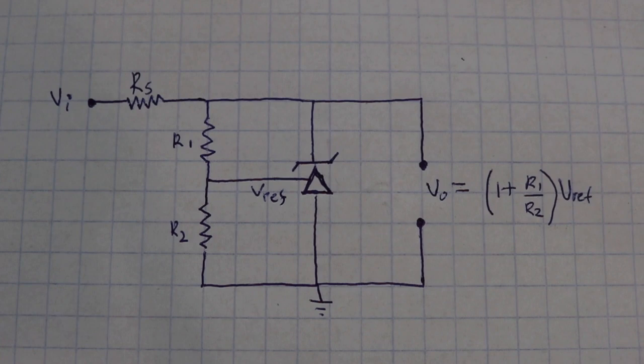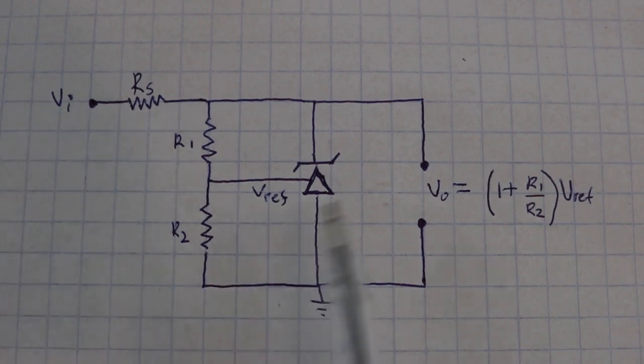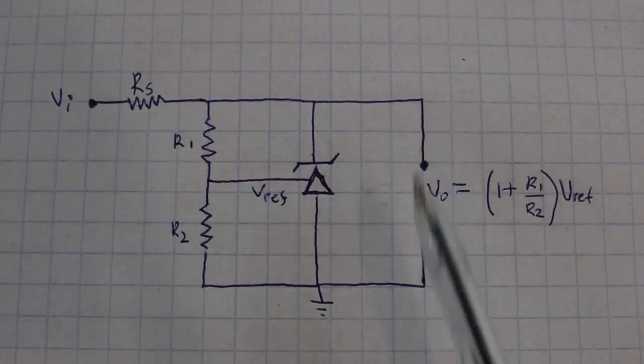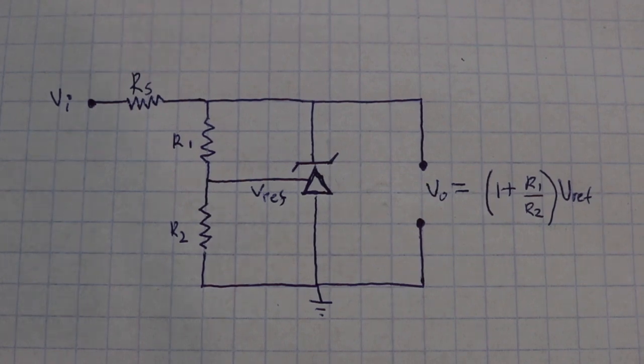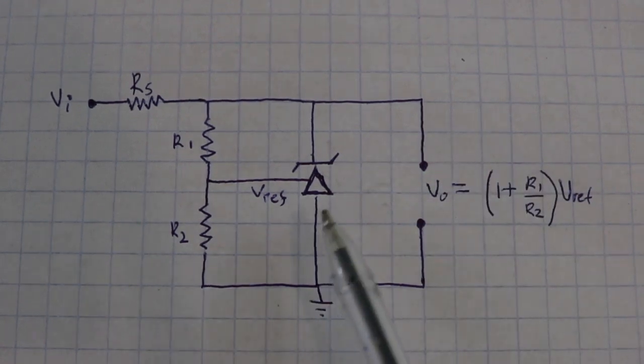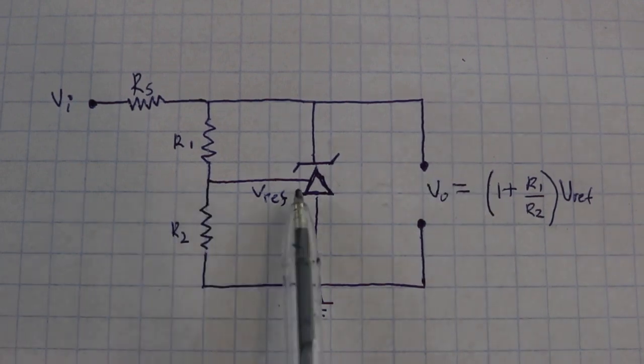This is the basic connection of the TL431. Similar to a Zener diode, you apply an input voltage and the device stabilizes the output voltage to a preset value. However, unlike the Zener diode that can handle a single output voltage, this device can vary the output voltage depending on the voltage that you apply in this pin.